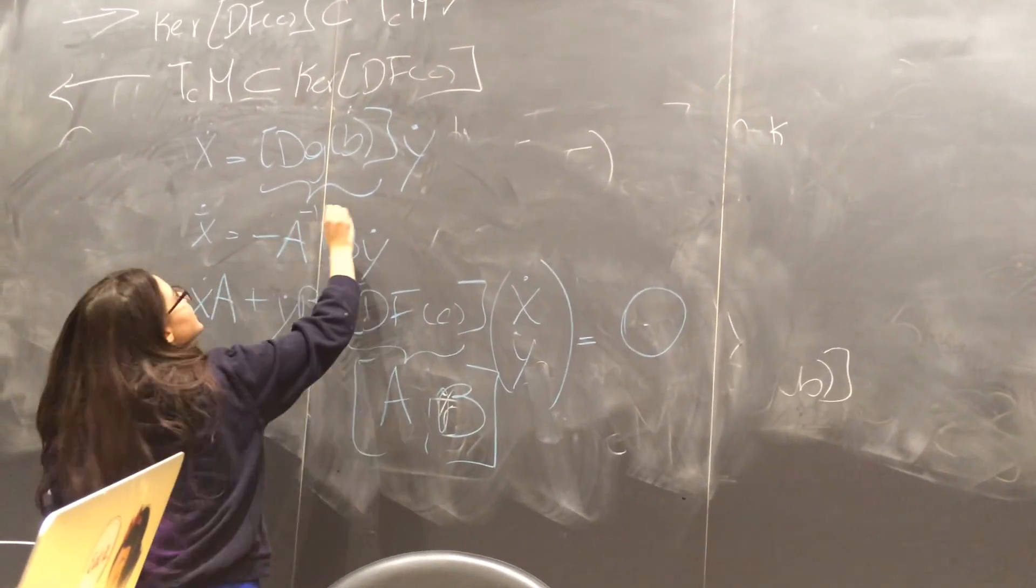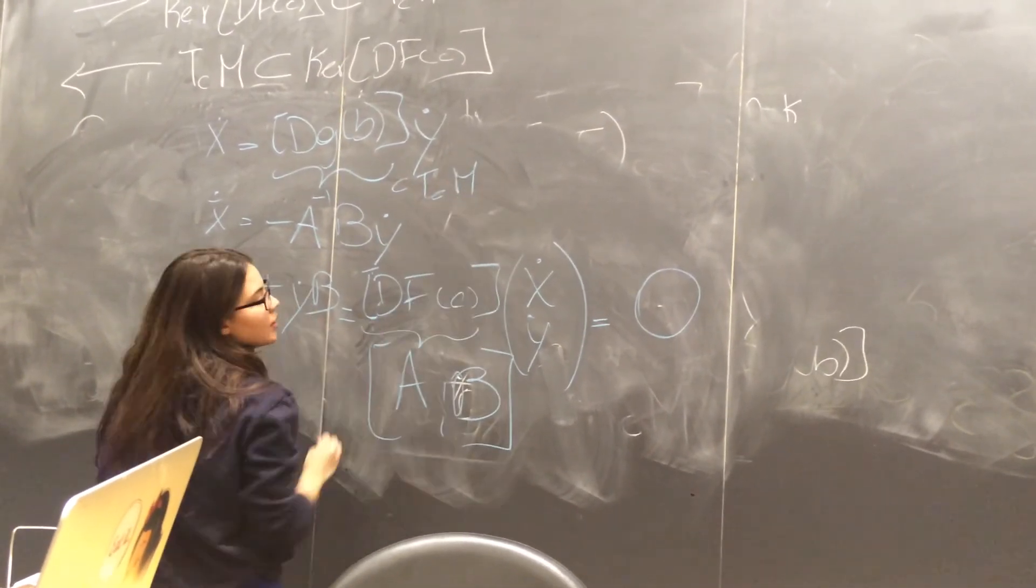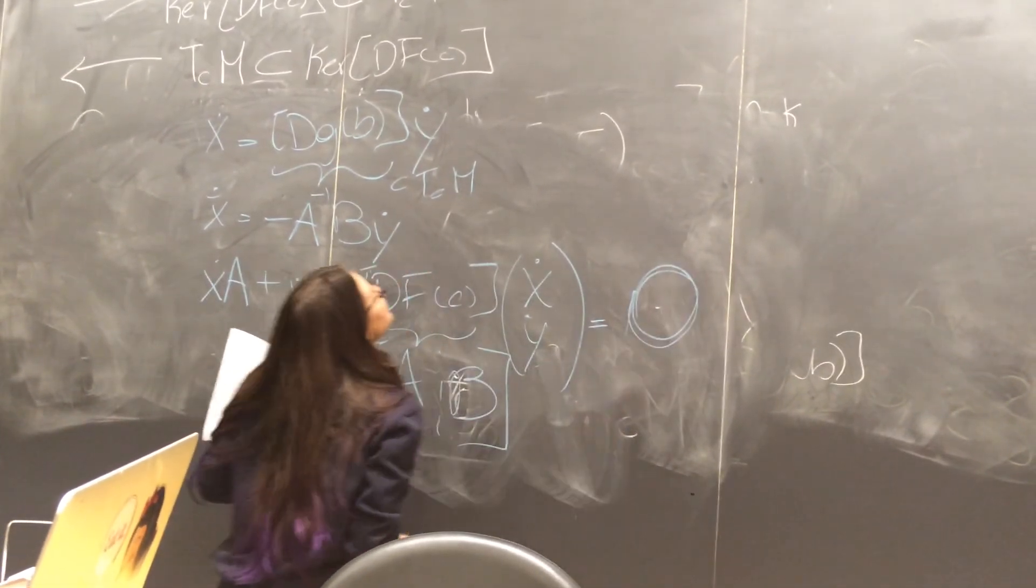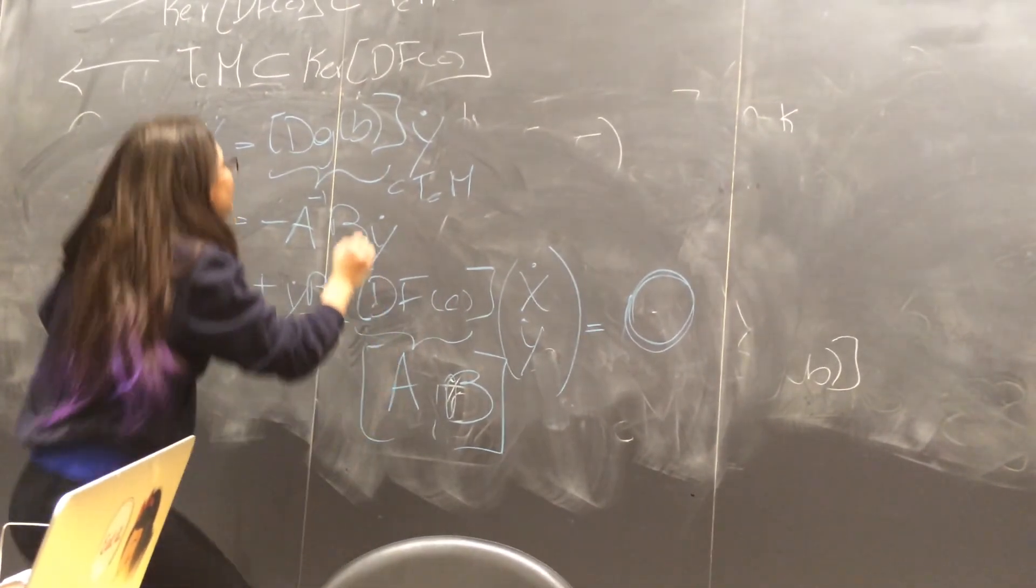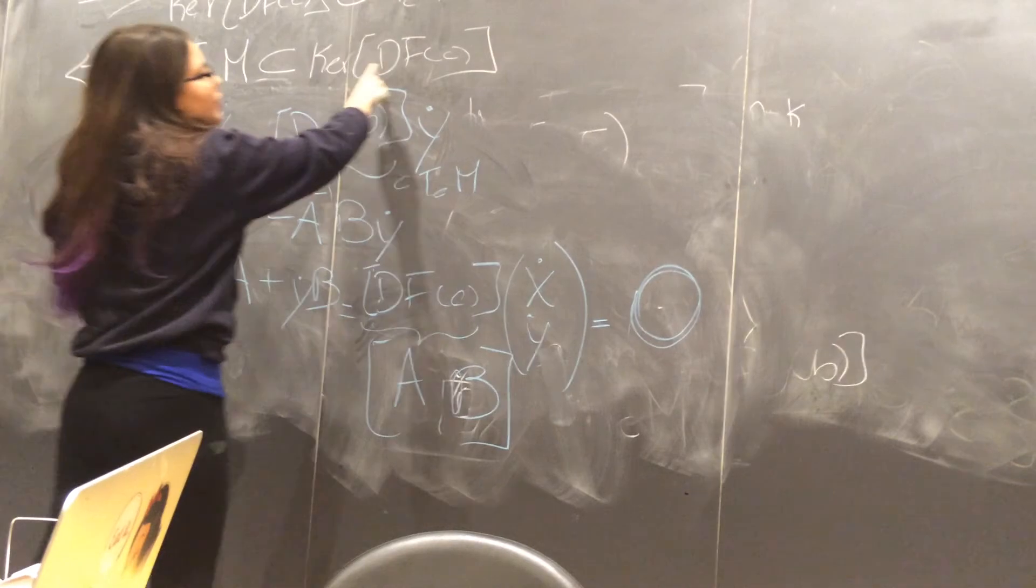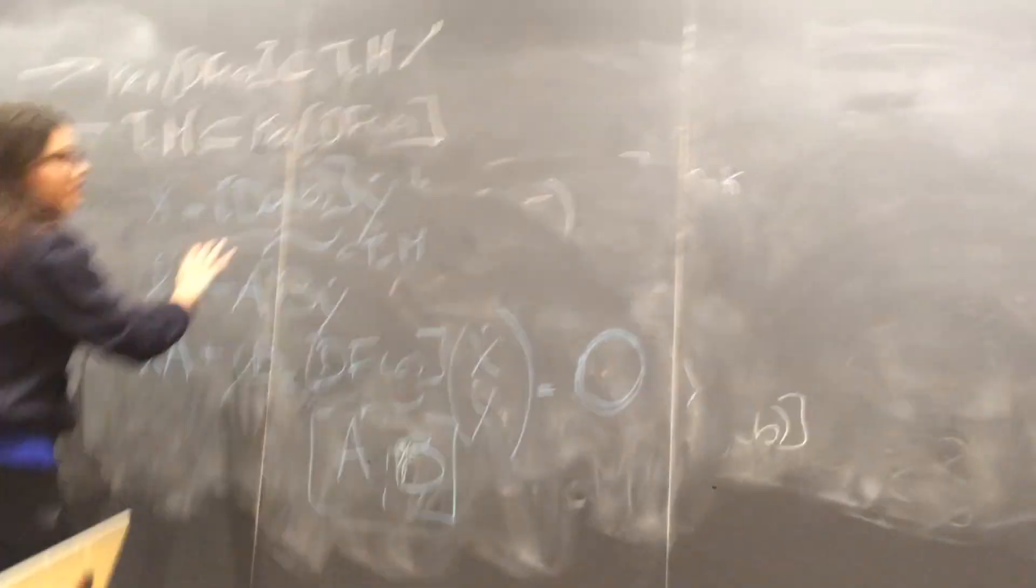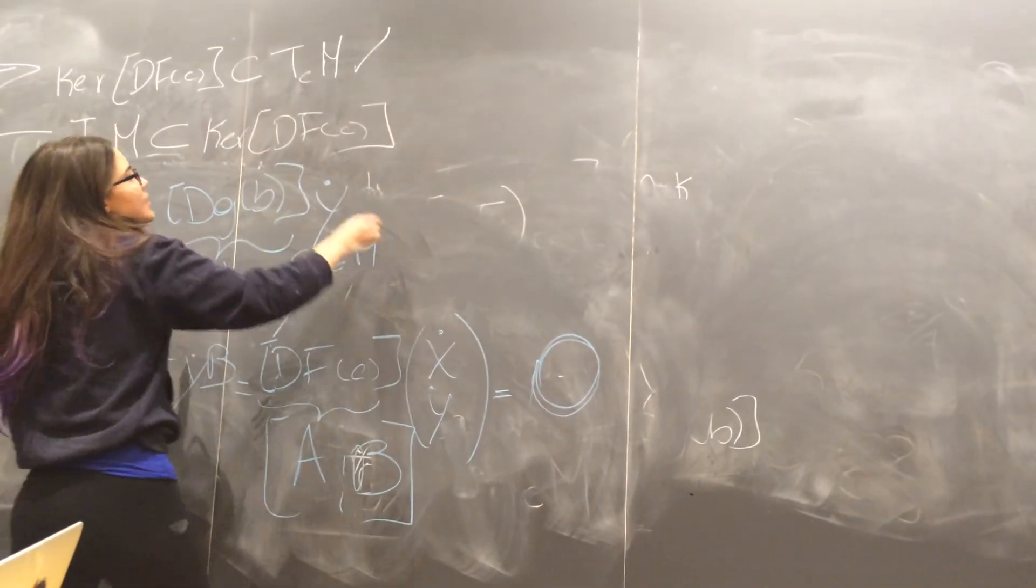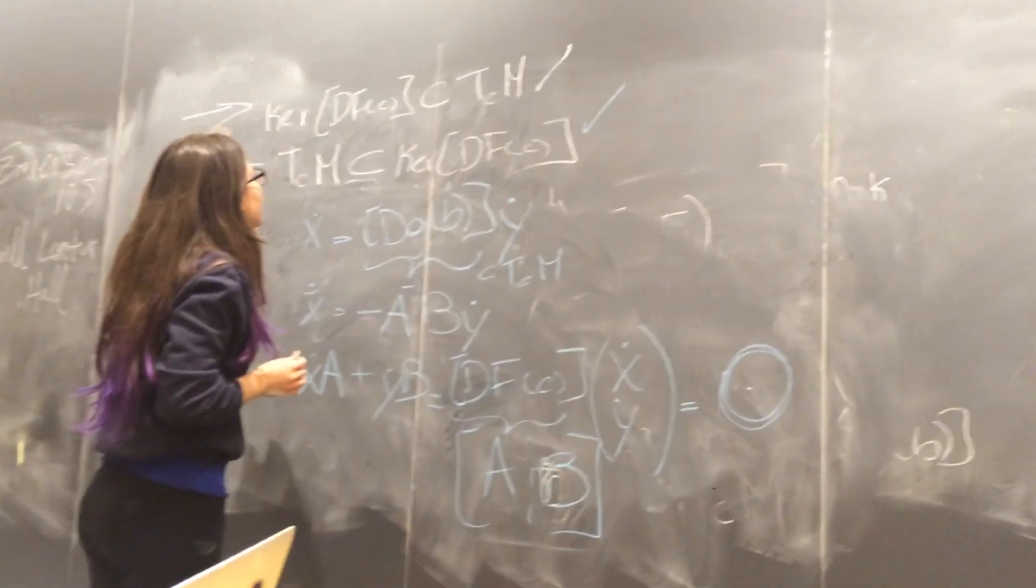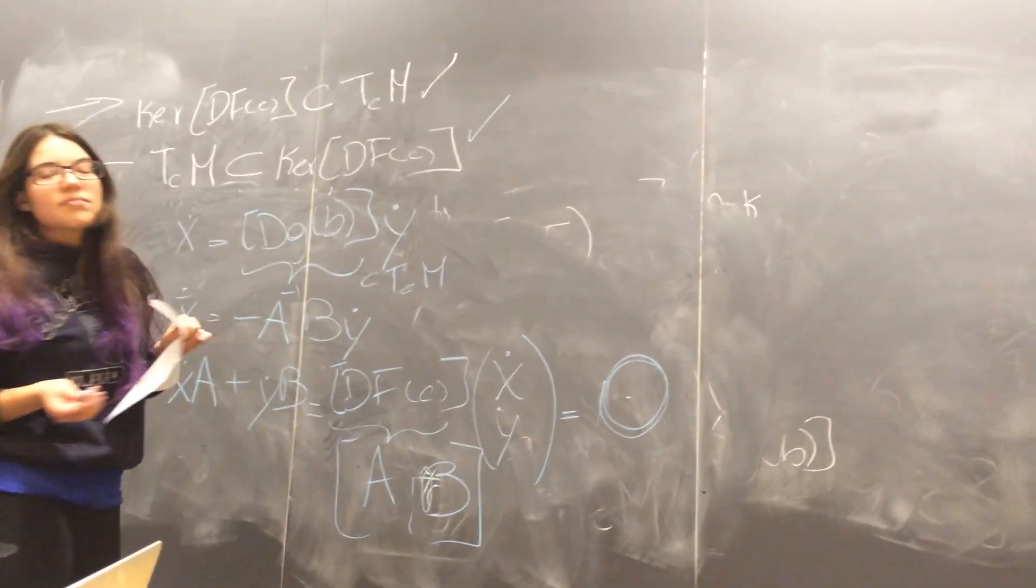We started here and this we have proved is in the tangent space TCM, and this is giving zero. So this is basically telling me that TCM is in the kernel of DFC because I'm applying DFC to this increment which is the tangent space and I'm getting zero. So it's in the kernel of DFC. And I have proved two points. So I have proved that the tangent space is the same as the kernel of DFC.